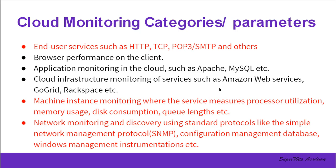Number three: application monitoring in cloud, relevant to specific tools like Apache, MySQL, databases, and web services. Number four: cloud infrastructure monitoring of services such as Amazon Web Services, GoGrid, and Rackspace — more about the cloud provider's overall infrastructure. Number five: machine instance monitoring, measuring processor utilization, memory utilization, disk consumption, queue lengths, etc. — specific to analyzing the virtualized environment. Number six: network monitoring and discovery using standard protocols like SNMP, configuration management database, and Windows Management Instrumentation.